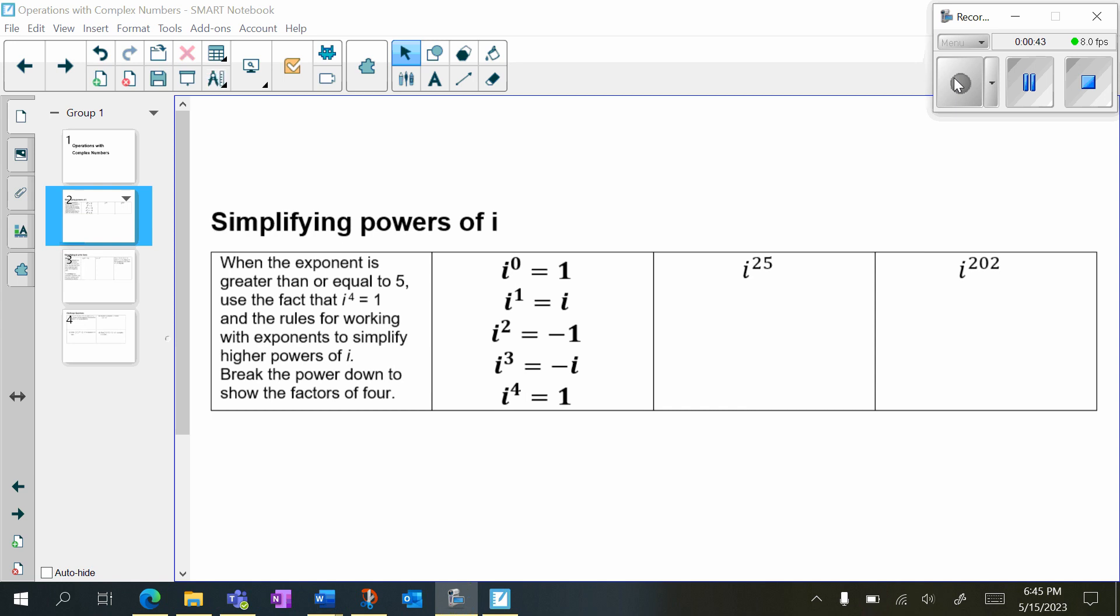Now, in order to simplify powers of i, when the exponent is greater than or equal to 5, use the fact that i to the 4th is equal to 1, and the rules for working with exponents to simplify higher powers of i. We want to break the power down to show the factors of 4.